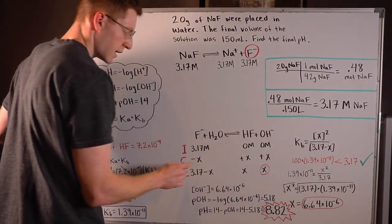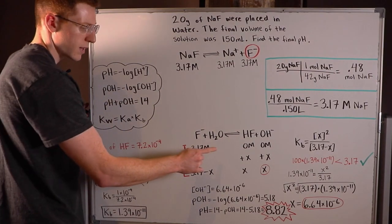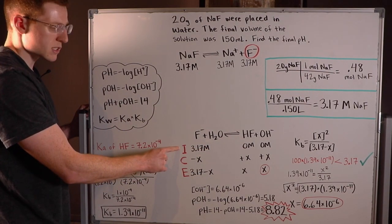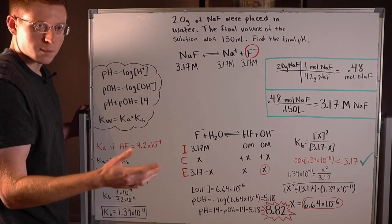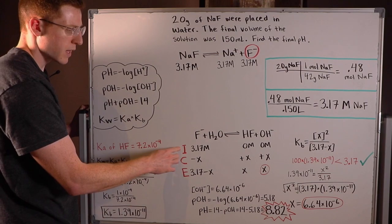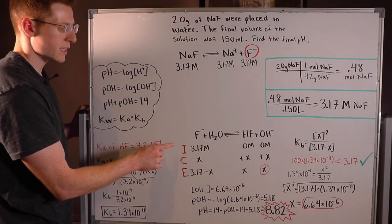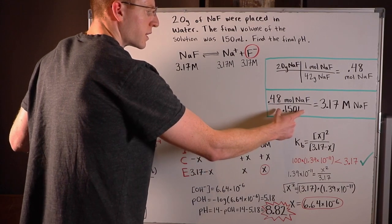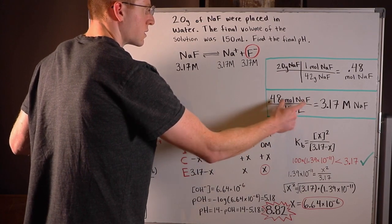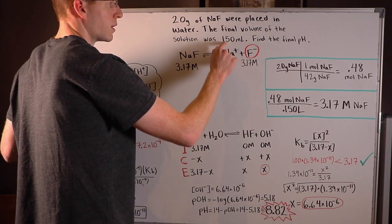Then to get the molarity, because the initial row in an ICE table always needs to be in either molarity, some form of concentration, or if you're dealing with Kp it could be atmospheres of pressure, but we can't just put moles onto an ICE table, we need molarity. So I divided moles of NAF by the total volume in liters of the solution, which was 150 or 0.15 liters.